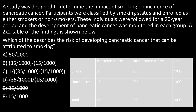Now we're left with B and C, which look nearly identical. The only difference is that C is one divided by B. Looking at B, it subtracts the risk of pancreatic cancer in non-smokers from the risk in smokers — and that is the definition of attributable risk. C, which is one divided by the attributable risk, is the number needed to harm. So we cross out C and select B as our answer.